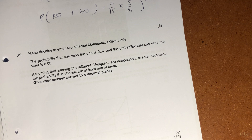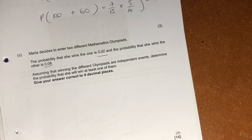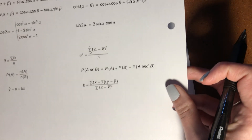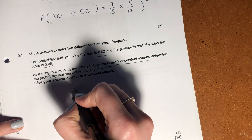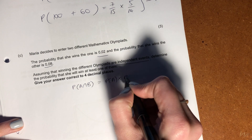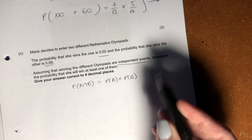Let's do our last probability question. Maria decides to enter two different maths Olympiads. The probability that she wins the first is 0.02, and the probability that she wins the other is 0.08 — so she has a better chance in the second one. Assuming that winning the different Olympiads are independent — when you think 'independent,' go to your formula sheet: P(A and B) = P(A) × P(B). Independence means winning one does not impact her probability of winning the other.